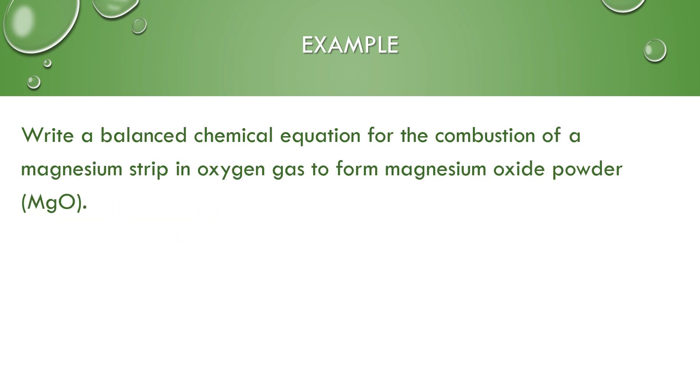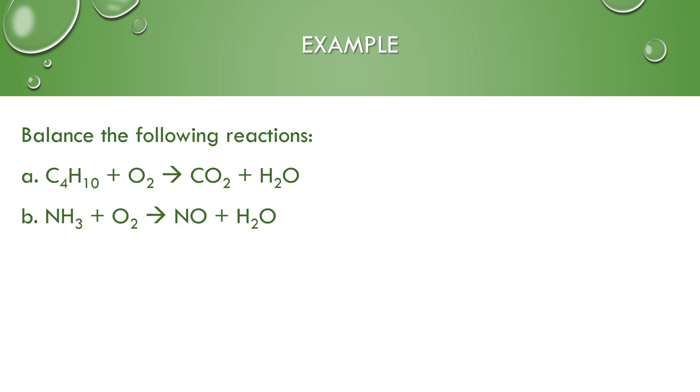For this example, it says to write a balanced chemical equation for the combustion of a magnesium strip. So solid magnesium and oxygen gas to form magnesium oxide powder, MgO. And as a powder, so it's a solid. And then you would need to balance. There's two oxygens, so you have two, and then two magnesiums.